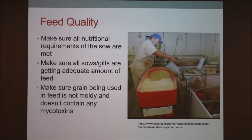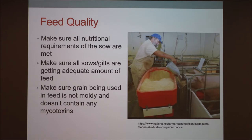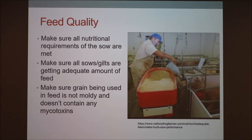Feed quality is another big one that often gets overlooked. Make sure all the nutrient requirements for a sow are met. You want to make sure your feed doesn't have any mold in it — test for mycotoxins if you can, because that will really affect reproduction. Make sure all the sows are getting an adequate amount of feed depending on your housing system. If they're in group housing and you've got a dominant sow knocking others off the feeder, make sure the lower-ranked sows are getting enough. Make sure grain is not moldy, and if it is, don't use it on pregnant or breeding sows.